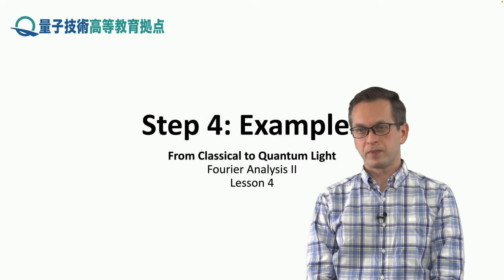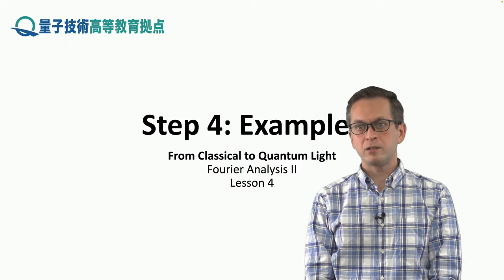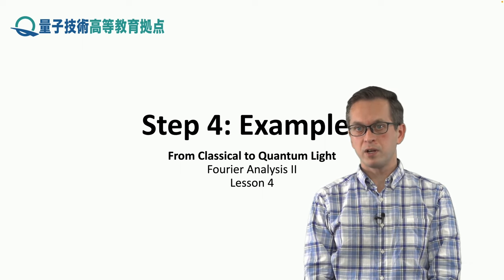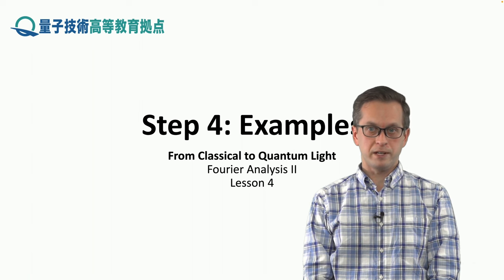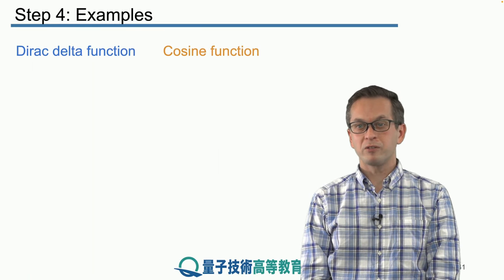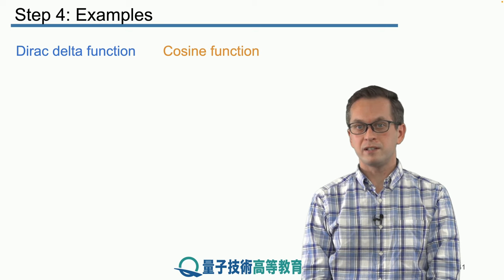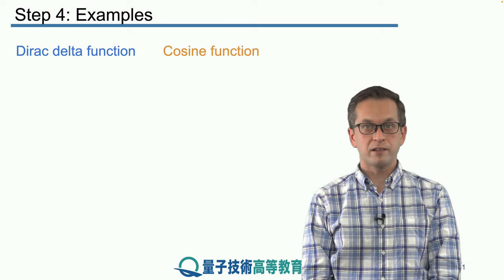Step 4. Examples. So in this lesson we have spent a lot of time deriving the forward Fourier transform, the inverse Fourier transform. Now it's nice to apply to some concrete examples. We're going to begin with something very familiar that can be performed very easily. We're going to start with the Dirac delta function.